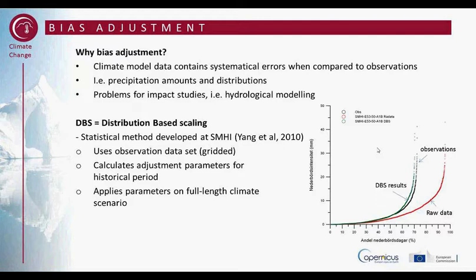The red curve here shows the raw data output from the climate model, and you have observations and results after bias adjustments in the green curve to the very left. The diagram shows number of precipitation days on the x-axis and the precipitation intensity on the y-axis. This really shows that the models usually have too many days with precipitation, and that is usually days with very little precipitation.